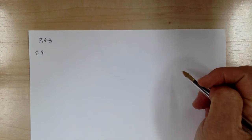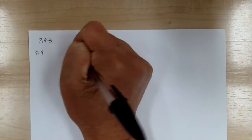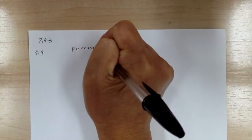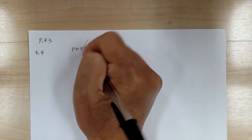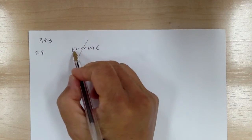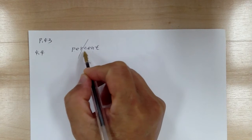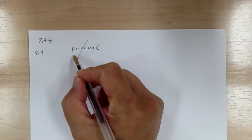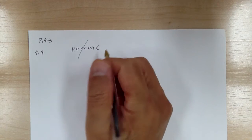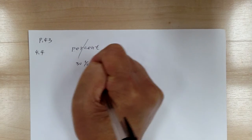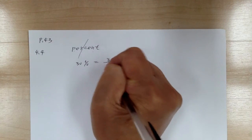Let's go to page 43, and this is lesson 4.4, and this is about percent. So percent means over 100, or per 100. So 30% means 30 over 100.